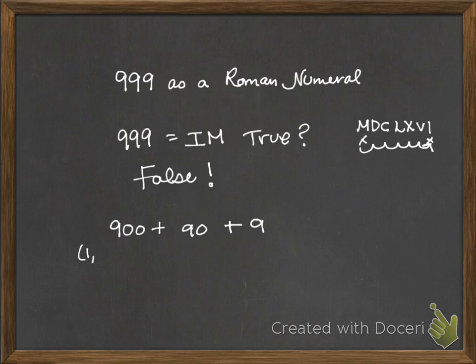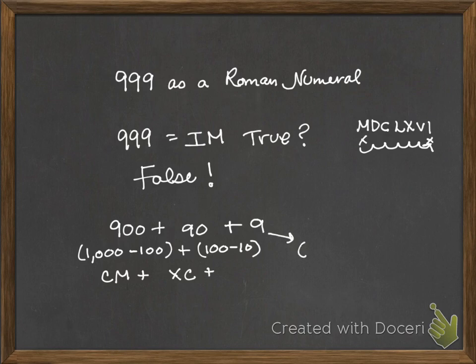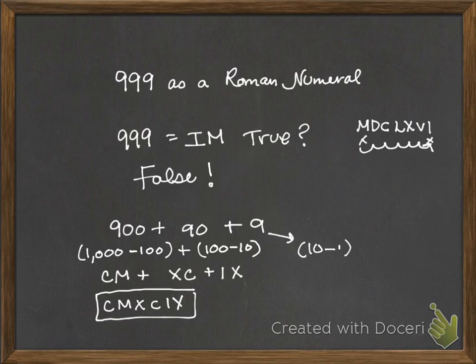So how do I write this up? I'm going to have to break it up. I'm going to have to do 900 plus 90 plus 9. 900 is 1,000 minus 100. That gives me M and C, so CM. Plus 90, I'm going to get 90 by taking 100 minus 10, so C and then I put an X in front of it. Plus 9. 9 is close to 10, so we can do 10 minus 1 because 1 is two places down from it. So 10 is X, and 1 is I. So CMXCIX would be the answer to make that true. 999 is equal to CMXCIX.